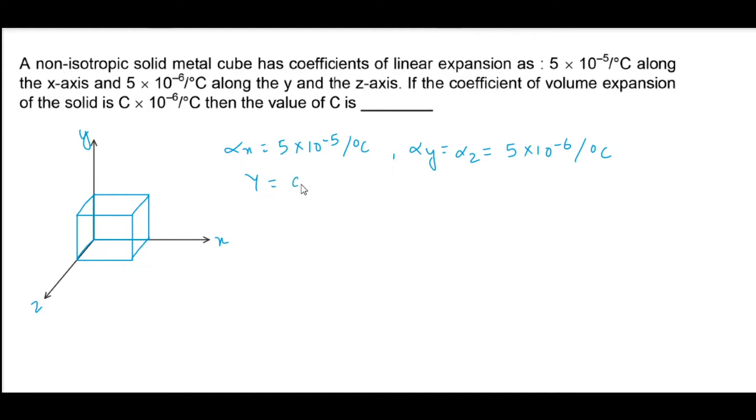So gamma is given as c into 10 raise to the power minus 6 per degree celsius, and we are supposed to find the value of c.